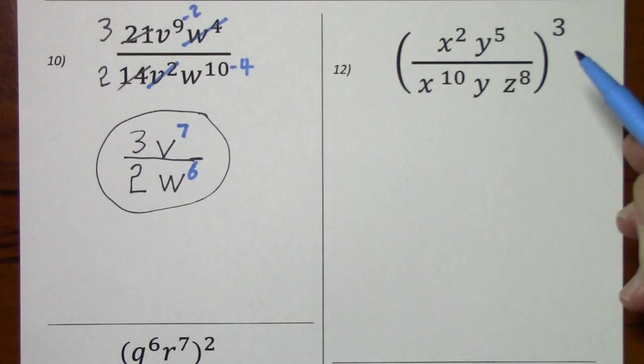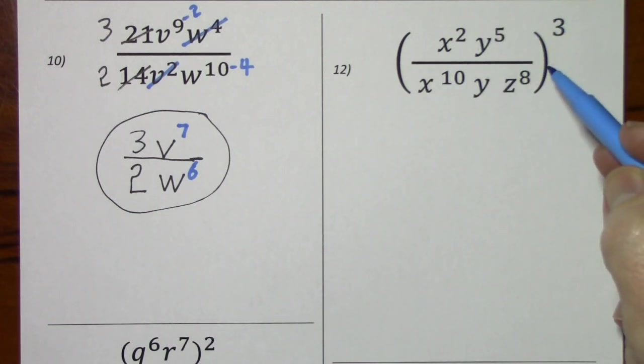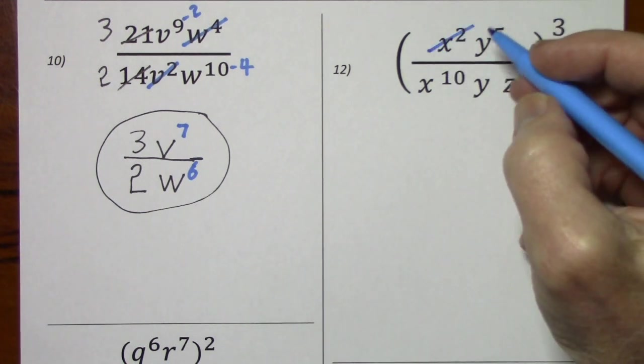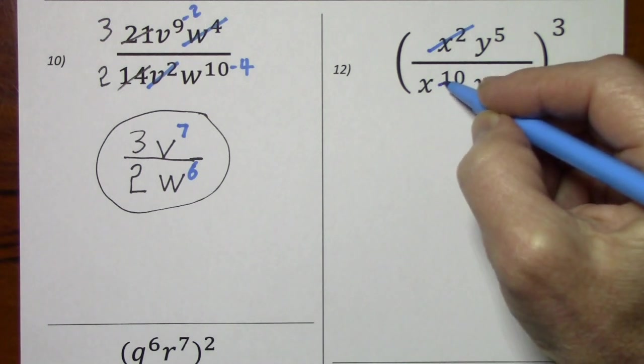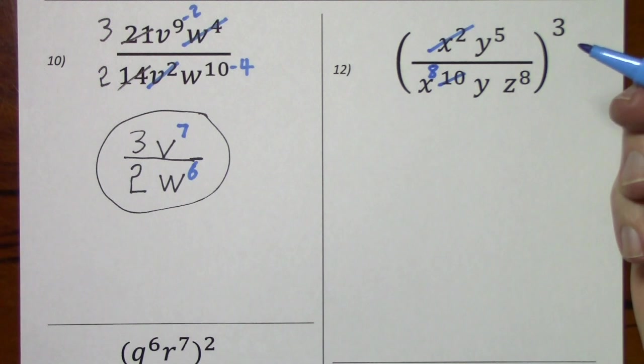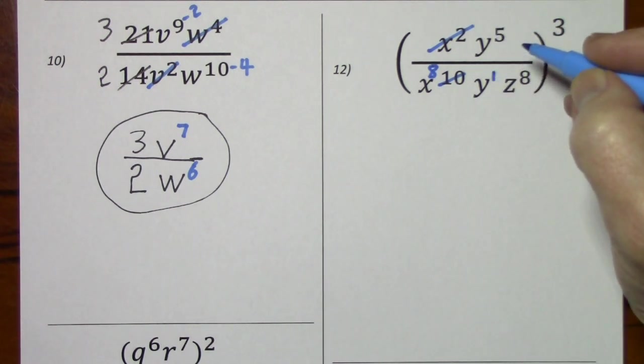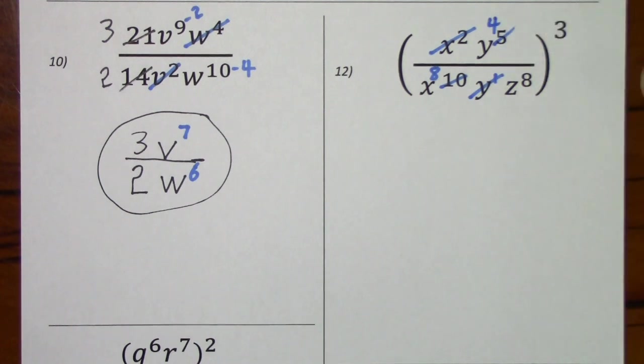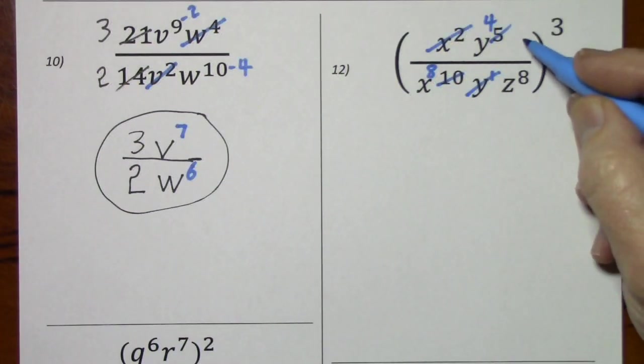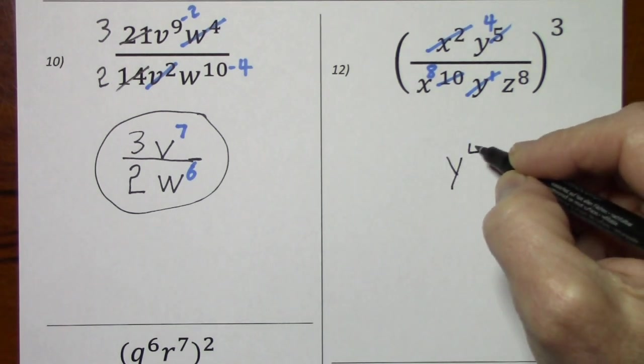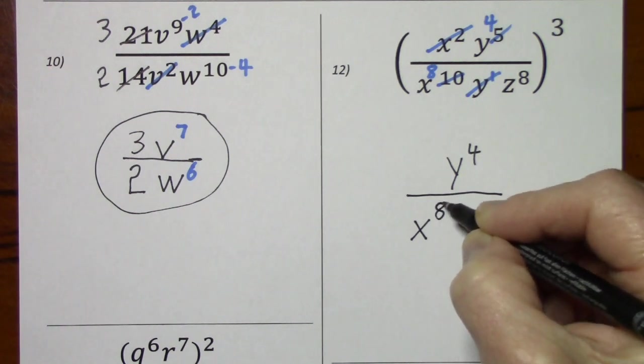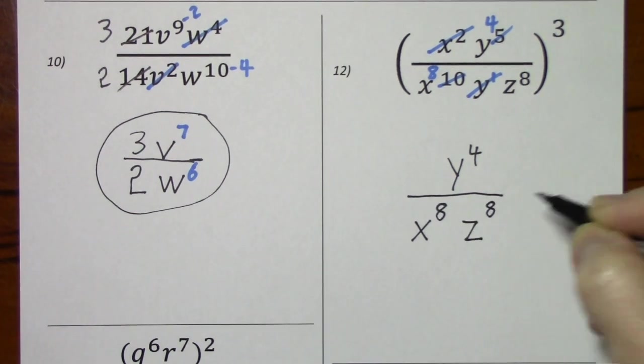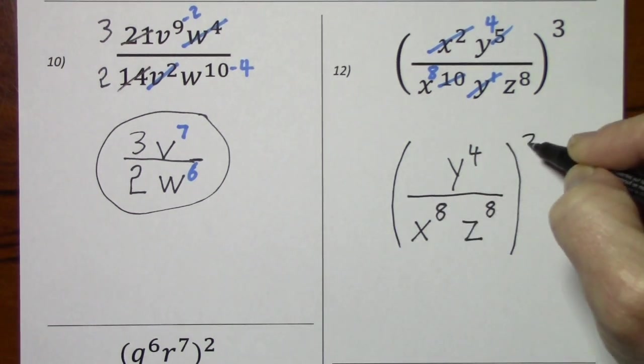Looking at number 12, everything in here is to get raised to the 3rd power, but rather than send in this 3 to each exponent, we can clean up what's inside first. So cancel out x squared, so long as you subtract 2 from 10, leaves you x to the 8th. With these y's, remember that's y to the 1st, cancel out y to the 1st, subtract 1 from 5, and you get 4. Z to the 8th, you're just stuck with it, there's no way to cancel. So we have y to the 4th, x to the 8th, z to the 8th, all raised to the 3rd power.